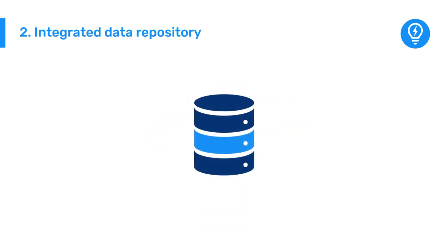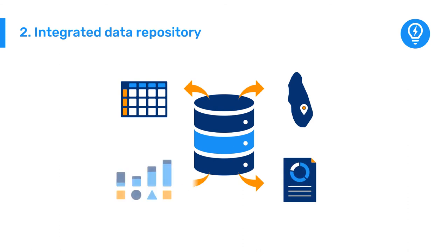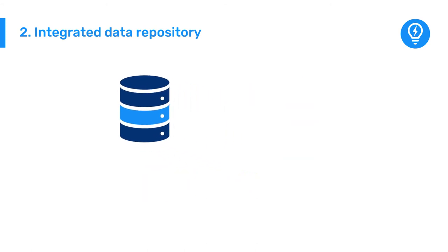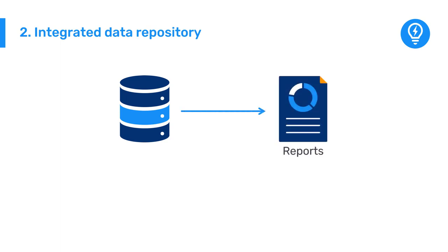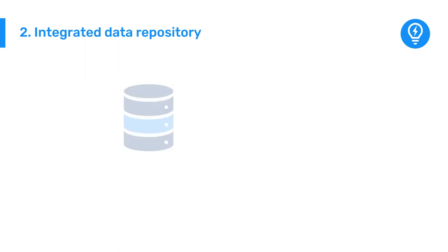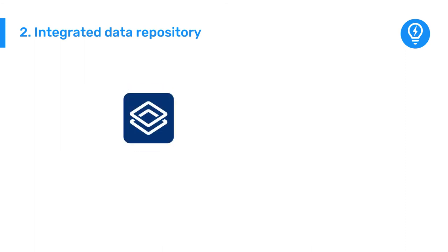These can all be brought together in DHIS2 to allow for data triangulation and the creation of indicators based on data from multiple sources. Using the data from multiple sources, reports can be assembled in many different formats and do not have to be linked to any single data collection mechanism, form, or system. In this way, DHIS2 has the potential to be a unified system for storage, analysis, and reporting of data.